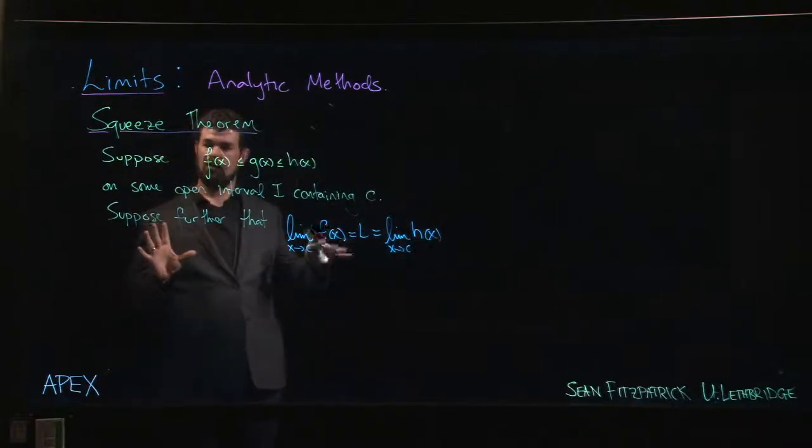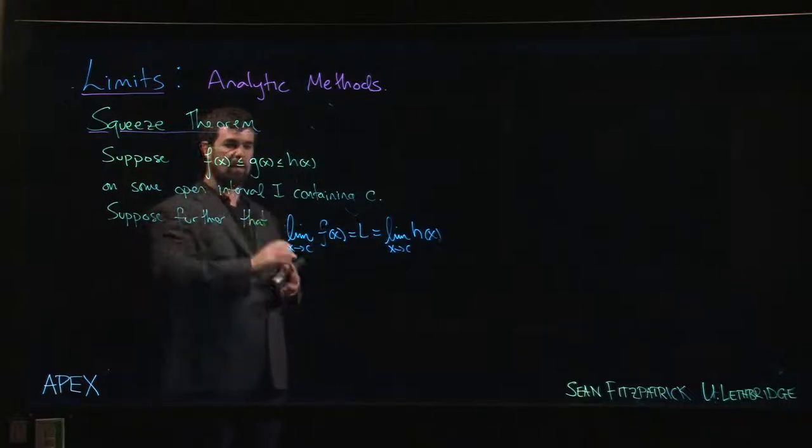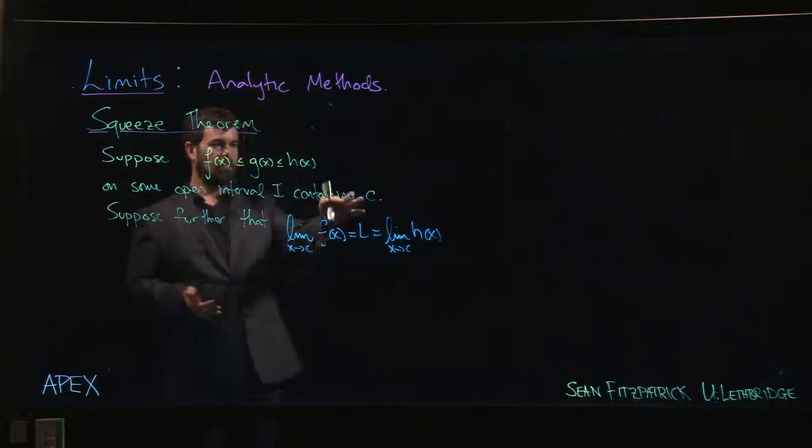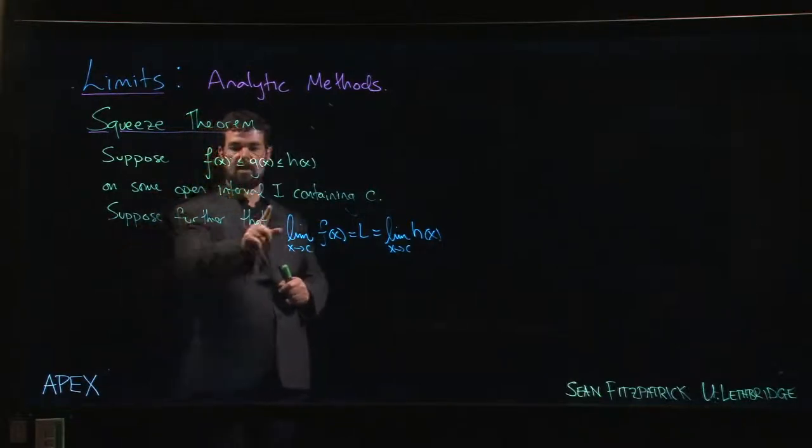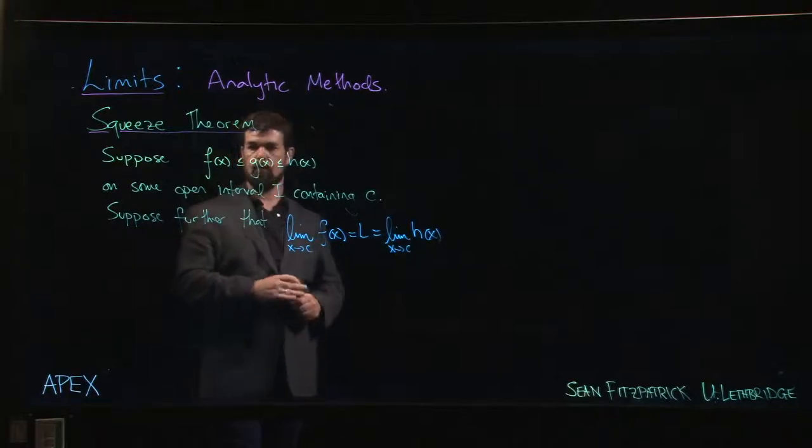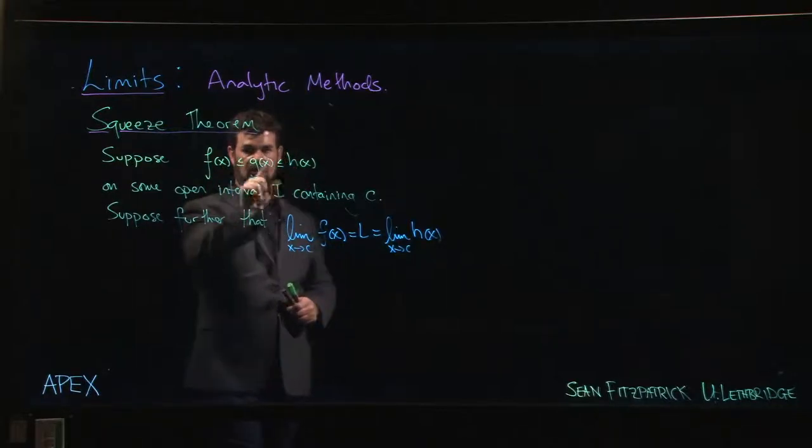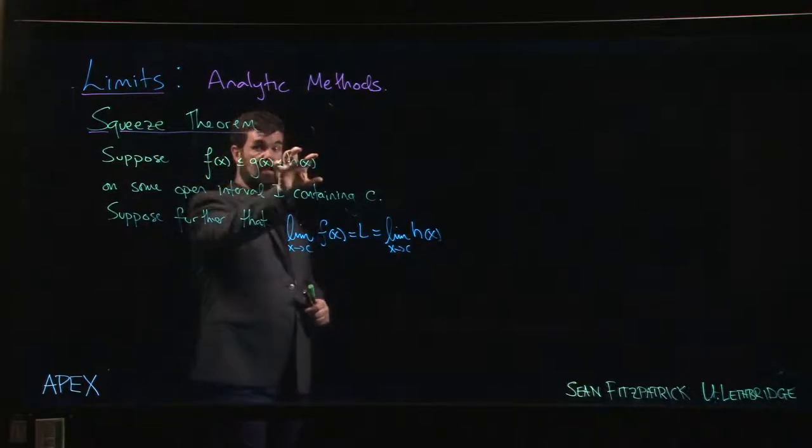It assumes that you have three functions defined on some open interval i, and somewhere in the interval we have this point c. We know that for every x in this interval, g of x is always in between f of x and h of x. So f of x is always smaller, h of x is always bigger.